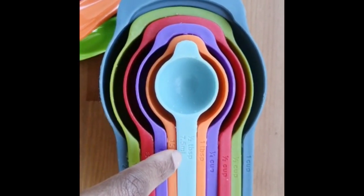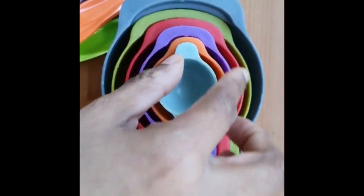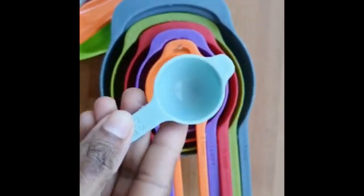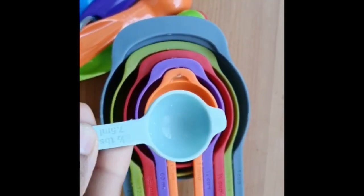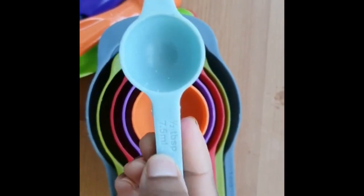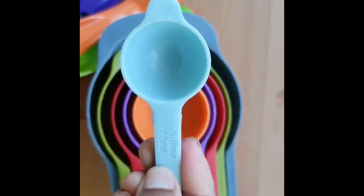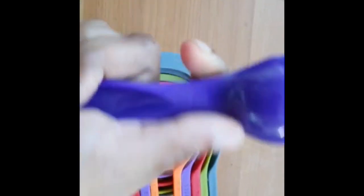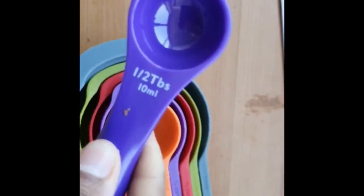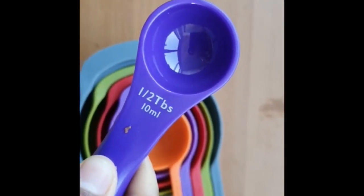7.5 ml is half tablespoon. So you can see the difference between the tablespoon and a teaspoon, right? So this is actually a tablespoon which is bigger, bigger size, okay? This is the half, this is tablespoon.